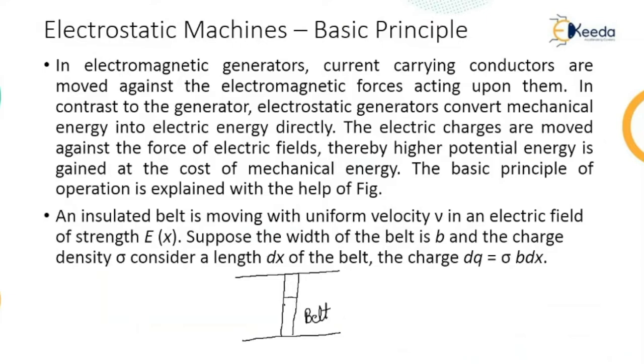We are going to consider a distance DX. The movement of that belt is in electric field E(x). The supply voltage is plus minus V and the distance is D. The width of the belt is B, and the charges are moving with velocity V.